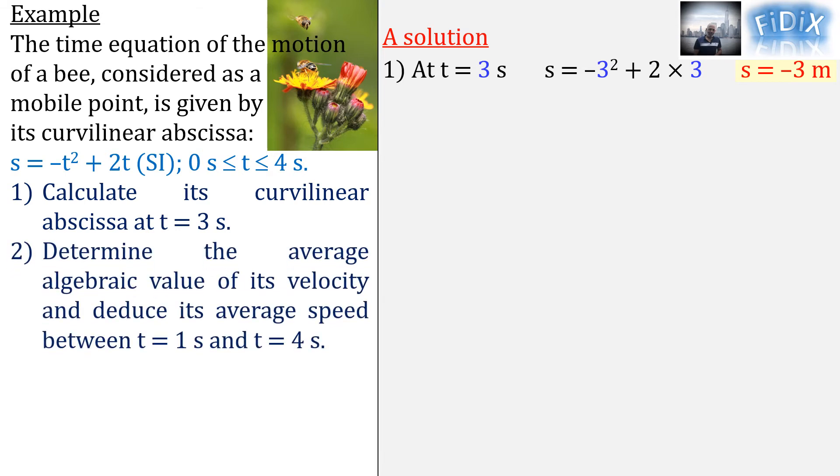Question 2: Determine the average algebraic value of its velocity and deduce its average speed between t equals 1 second and t equals 4 seconds. To answer this question, we need to apply the formula v_s average equals delta s over delta t. For this purpose, we will start by calculating the initial, then the final curvilinear abscissa by replacing t by its initial, then by its final values, 1 second, then 4 seconds in the time equation.